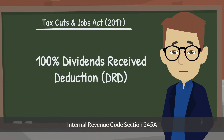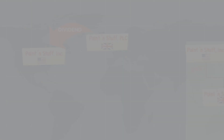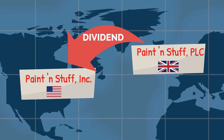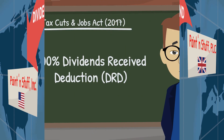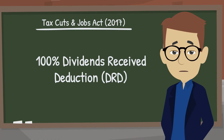First, certain domestic corporations might now be able to effectively bring income earned through foreign corporations back to the U.S. tax-free. The ability to repatriate foreign earnings without paying U.S. tax is accomplished through a 100% dividends received deduction, or DRD.